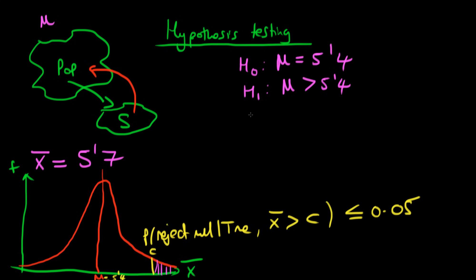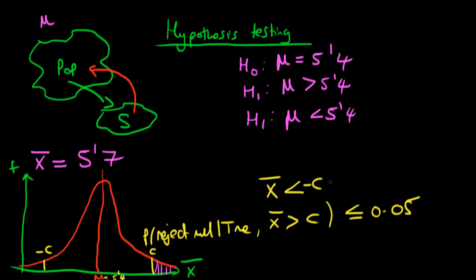There's another alternative hypothesis we could have formulated — another one-sided test — which would be that mu was less than 5 foot 4. Here what we would have done is found a value for x-bar which we'll call minus c. We would choose this value of minus c such that the probability that we would reject the null, given that it was true and given that x-bar would be less than minus c, would again be less than or equal to 0.05.